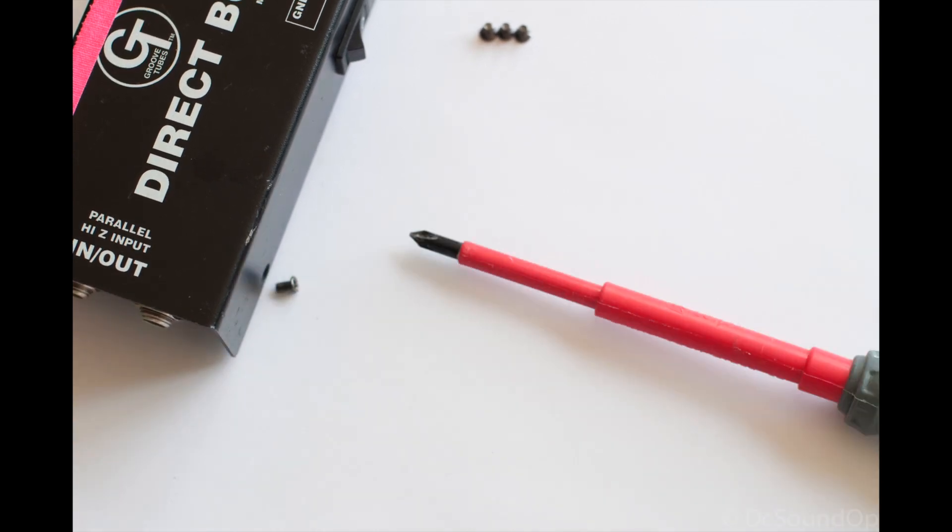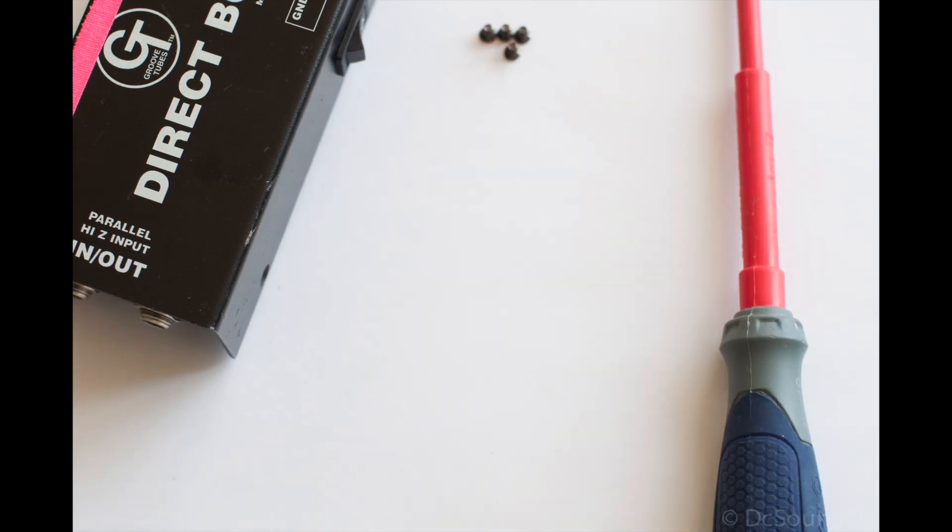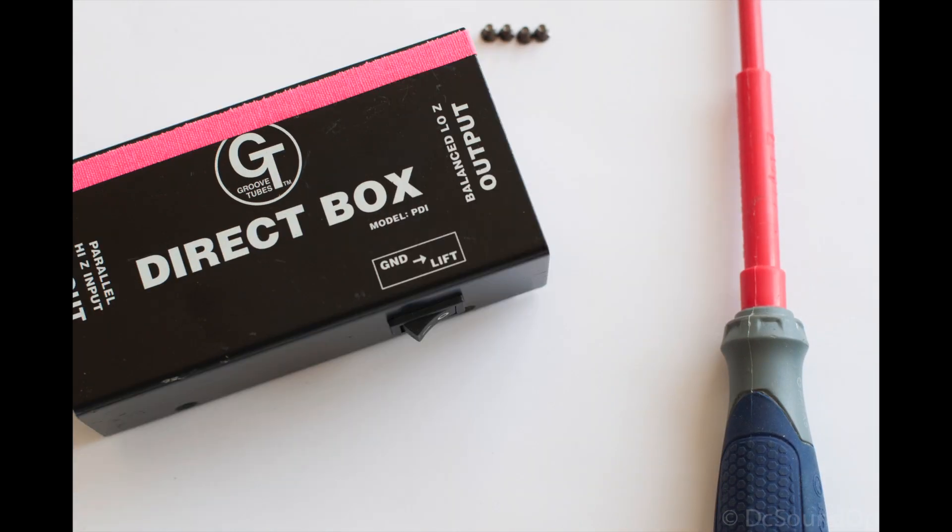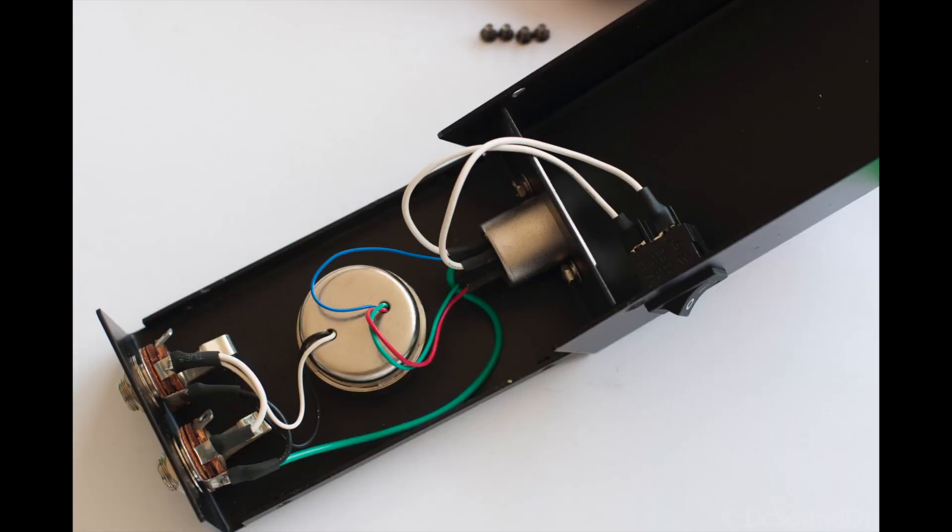We'd use an active direct box for something like a classical guitar where you don't want the direct box loading down the pickup. An active direct box comes with a buffer circuit in there to make sure that you don't load down the source and change the tone of that pickup.